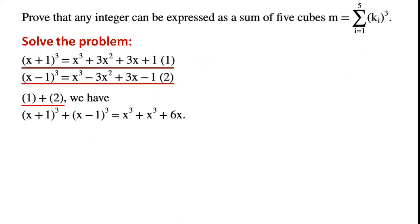Adding identity 1 plus identity 2, we have (x+1) cubed plus (x-1) cubed equals x cubed plus x cubed plus 6x.